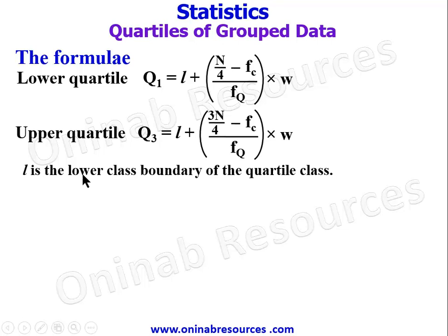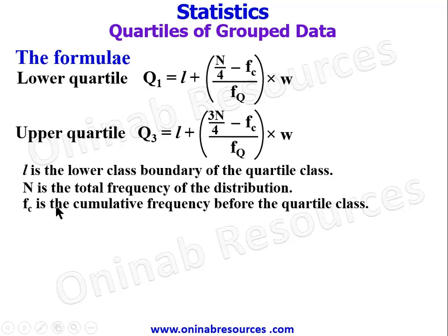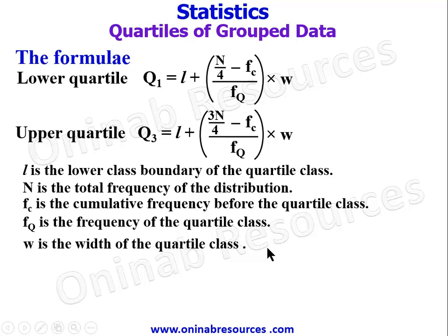L is the lower class boundary of the quartile class, whether lower quartile or upper quartile. If you know the class interval for the lower or upper quartile, we look for the lower class boundary of that class. N is the total frequency of the distribution, that is the sum of all the frequencies. fc is the cumulative frequency before the quartile class, either Q1 or Q3. fq is the frequency of the quartile class, while w is the width of the quartile class.